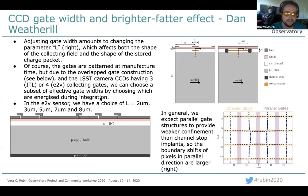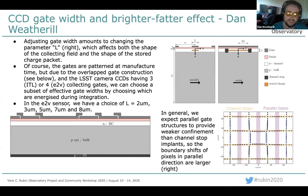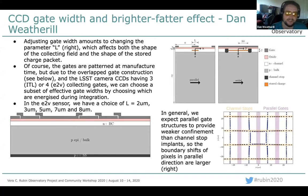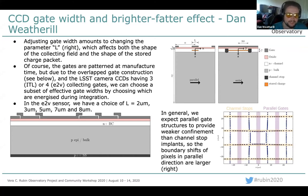The gate width is a parameter defined at manufacture time — it's a physical metal layer you can't directly change. However, because the CCD is constructed with a series of overlapping gates, you can effectively change the gate width by running with different numbers of gates energized during the integration phase. In an E2V sensor, this gives a choice of gate width of 2, 3, 5, 7, or 8 microns. In general, the parallel structure confines the charge more weakly than the channel-stop implants, which is why the brighter-fatter effect is generally larger in the parallel direction.